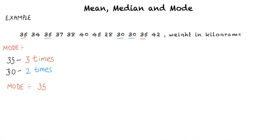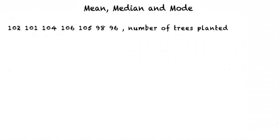Let us consider another example. We have the number of trees planted per day in a week by a non-profit organization. We thus have seven data points: 102, 101, 104, 106, 105, 98, and 96. We are required to determine the mean, median, and mode of this data.